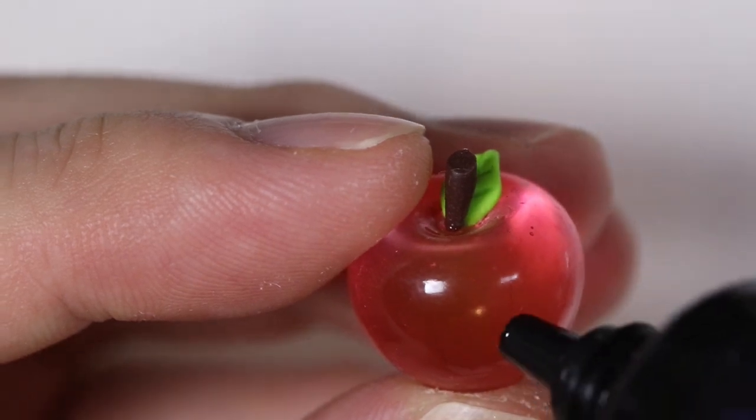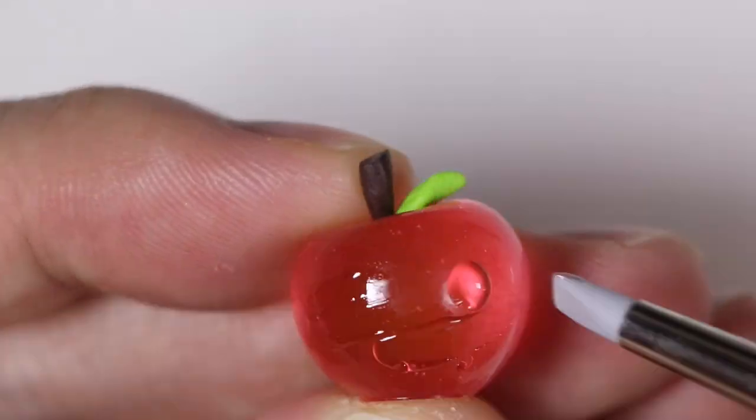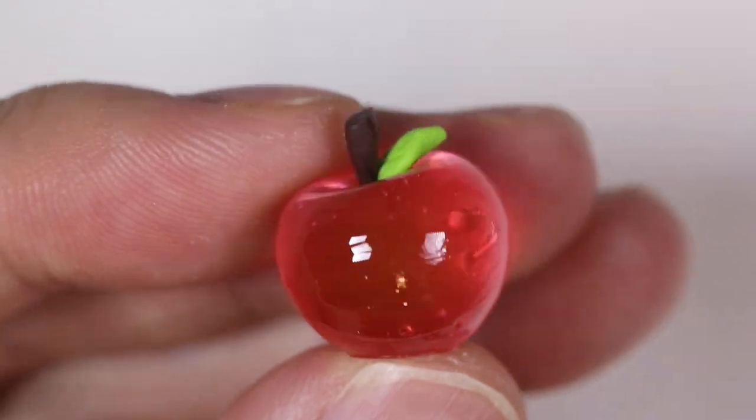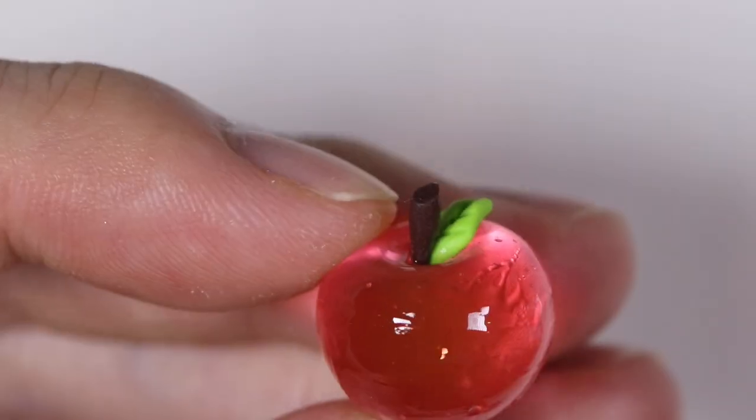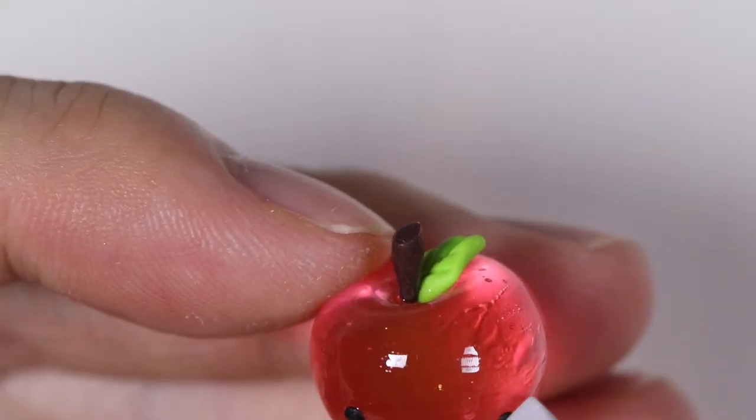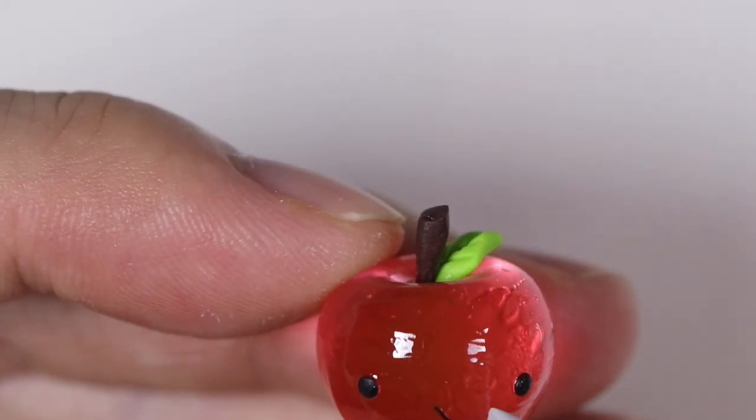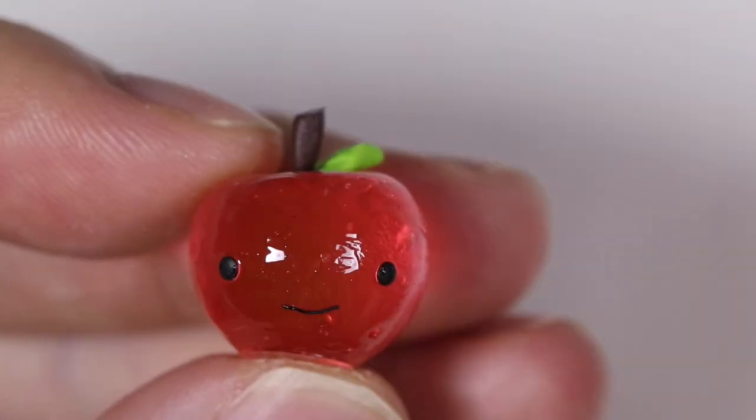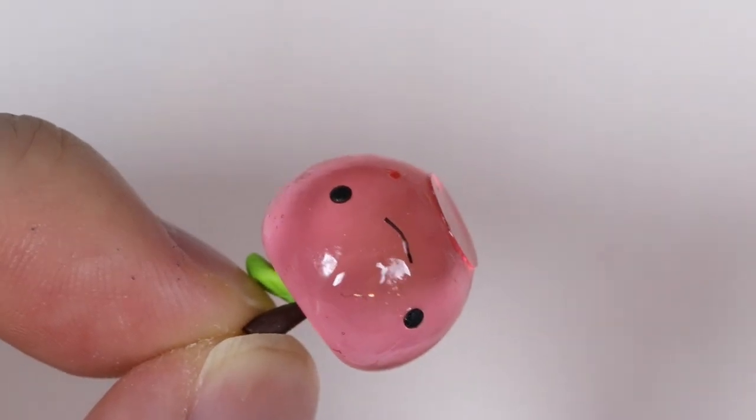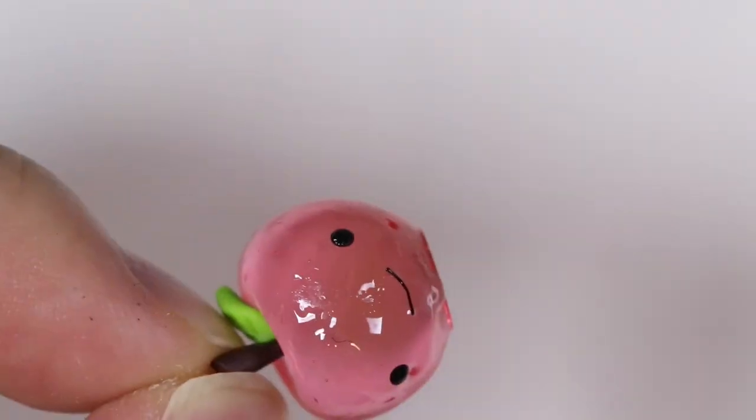And then I just smeared a little bit of UV resin onto the front of the apple and I just spread it around. And I'm going to use that as my glue so I can put on my dot eyes and line smile. It's been a while since I gave a standard dot eyes and line smile. Next, I gave the apple a layer of glaze and let that fully cure.